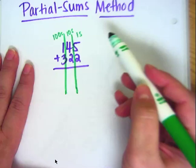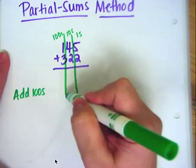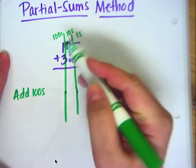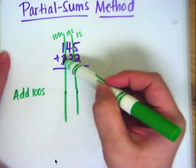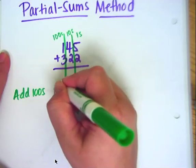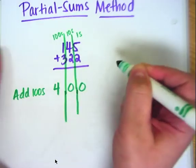Now our first step is we're going to add the hundreds. As you can see here, we're going to look at the hundreds, and we have 100 plus 300. So we're going to put a 4, symbolizing 400, and then 00 for our place markers.